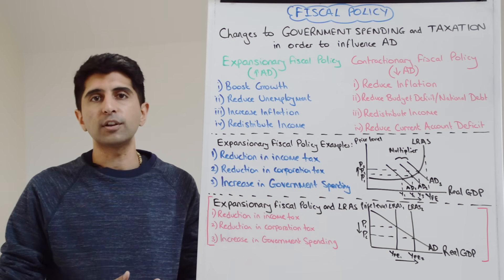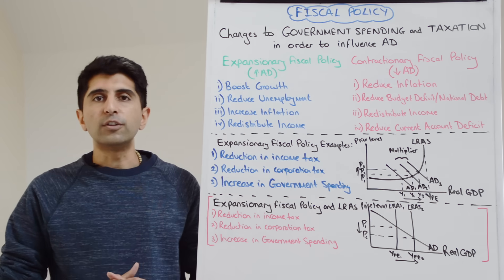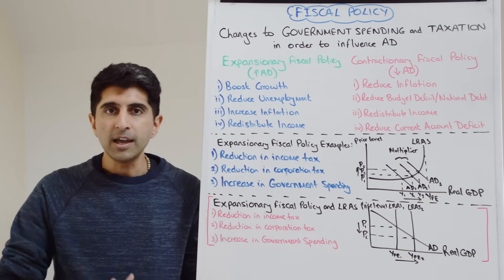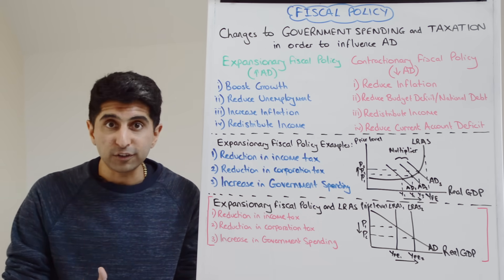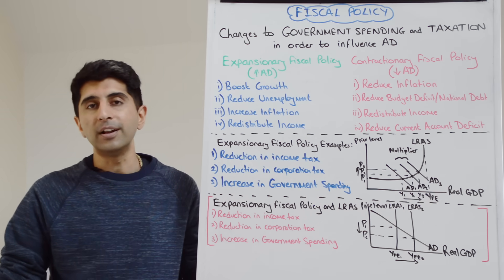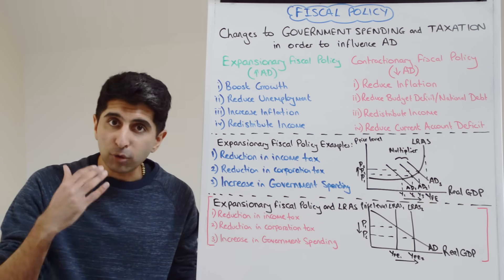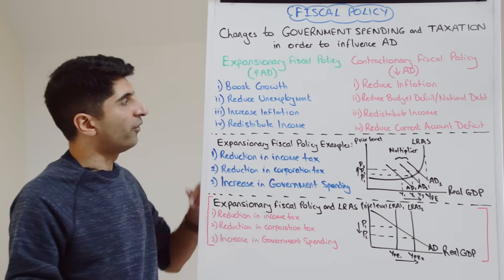If aggregate demand shifts to the right, there are going to be more goods and services being produced in the economy. Firms are therefore going to need more workers to produce that output — labour is a derived demand. Therefore employment will rise and unemployment will fall.